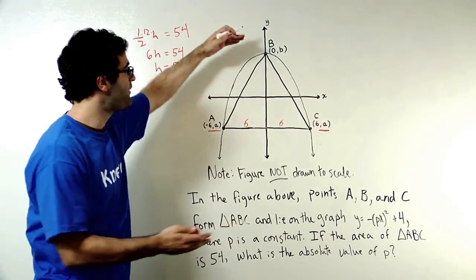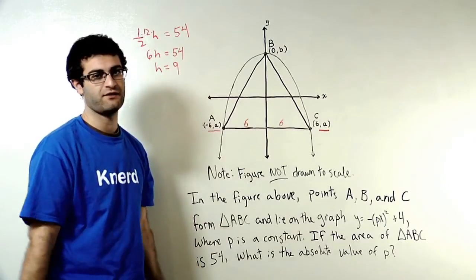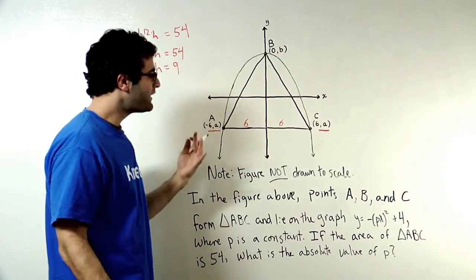Getting more information, I now know that the vertical distance of the triangle is 9. The height of the triangle is 9.